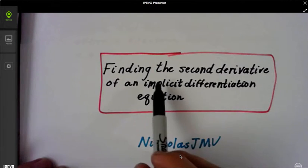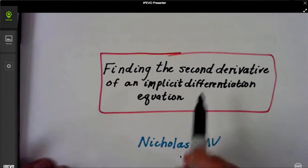Hey everyone, Nicholas, JMV. Today we're going to be finding the second derivative of an implicit function.